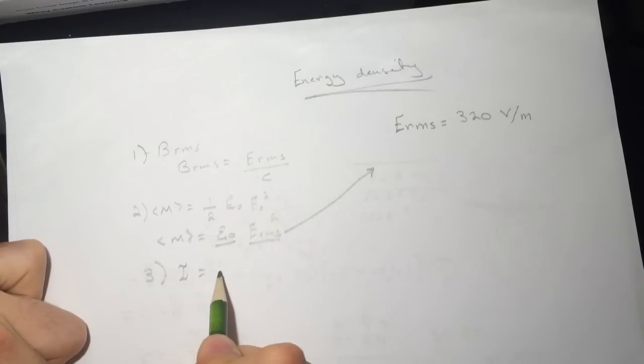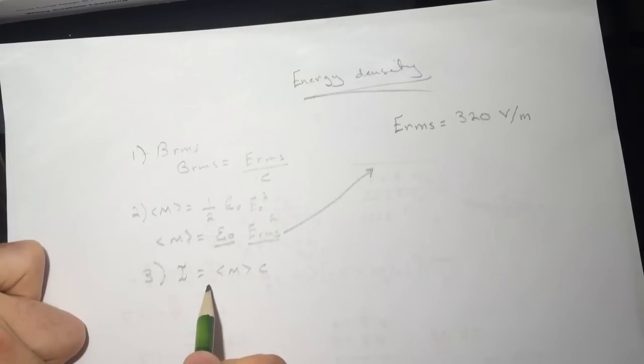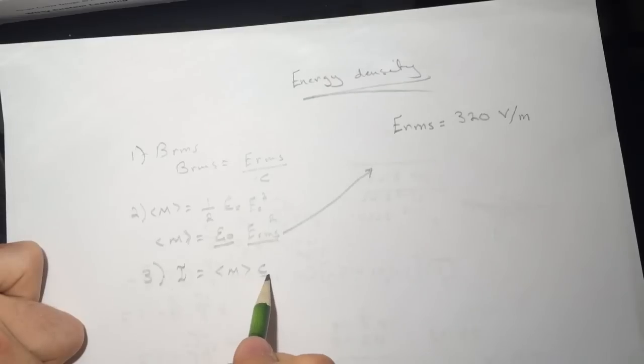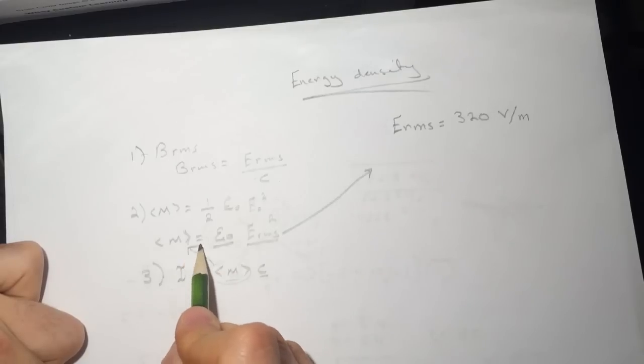The intensity is U times C. Remember, I see U - that's how I remember it. Intensity is I see U. So the U is the value you'll find here and C is the speed of light.